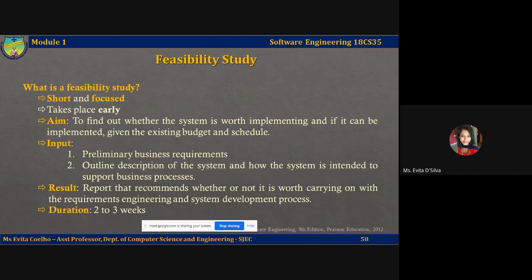The input to the feasibility study is a set of preliminary business requirements, an outline description of the system, and how the system is intended to support the business processes. The results of a feasibility study should be a report that recommends whether or not it is worth carrying on with the requirements engineering and system development process. It should answer three key questions: first, does the system contribute to the overall objectives; can the system be implemented within the given schedule and budget using the current technology; and can the system be integrated with other systems that are used. If the answer to any of these questions is no, you should probably not go ahead with the project.